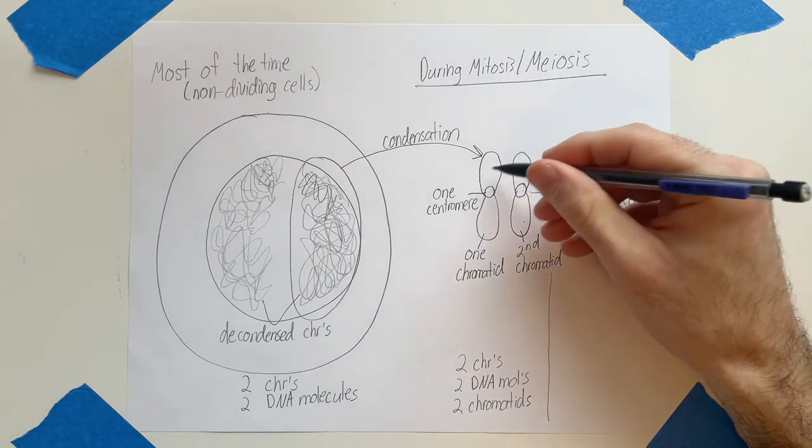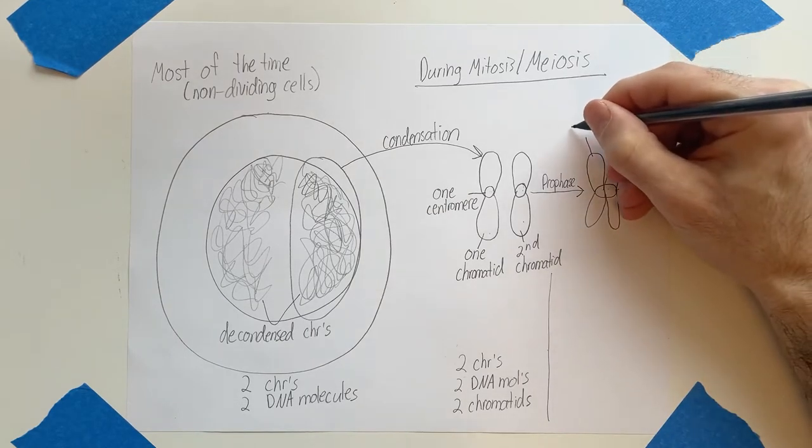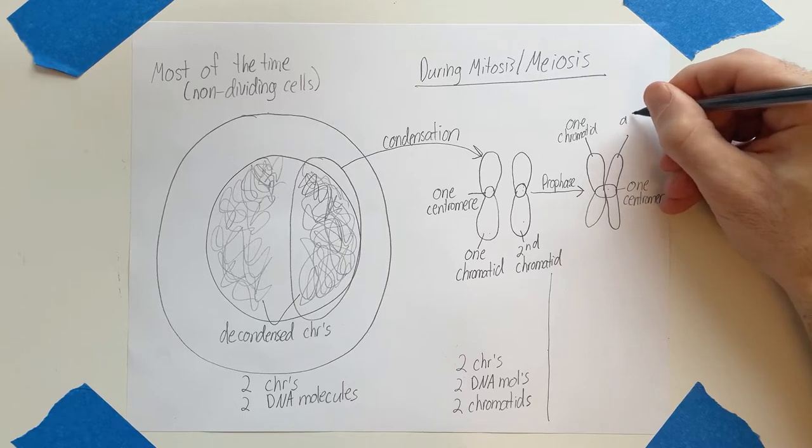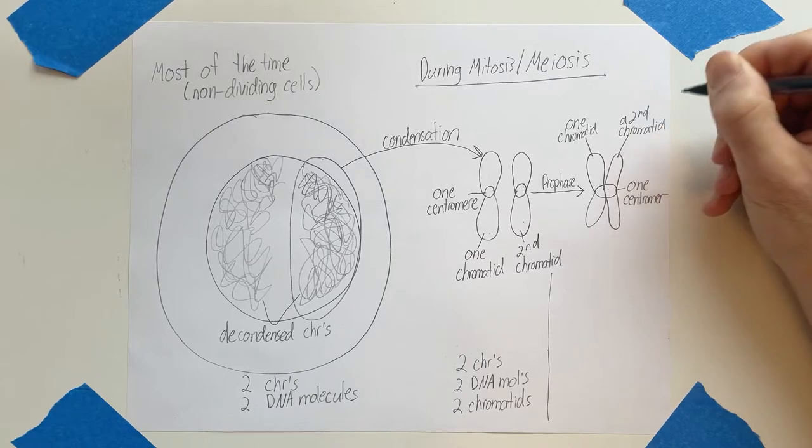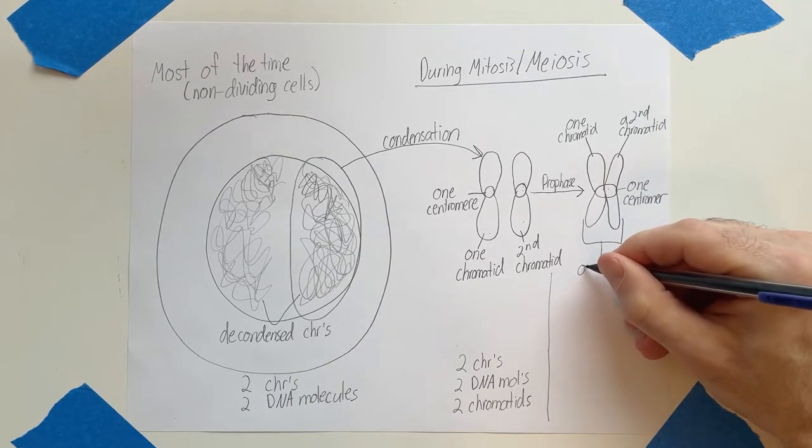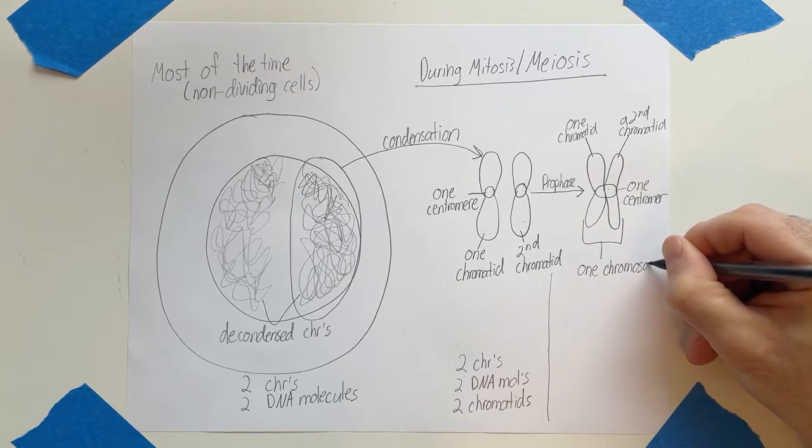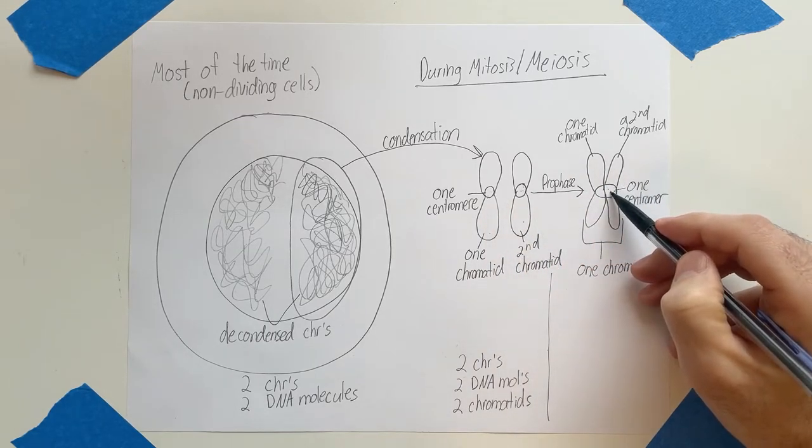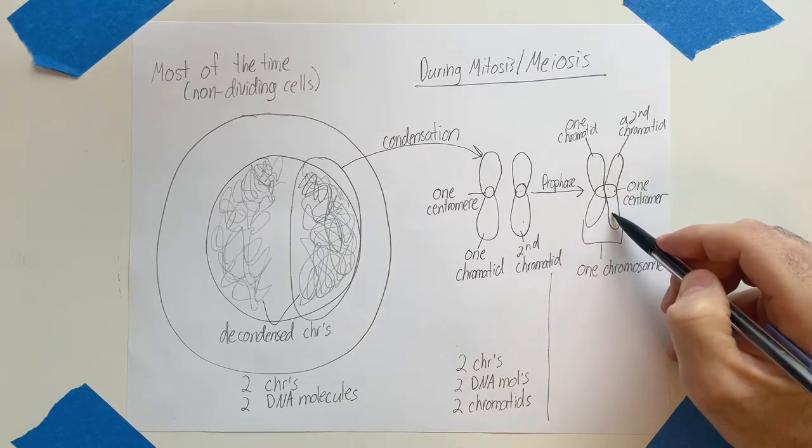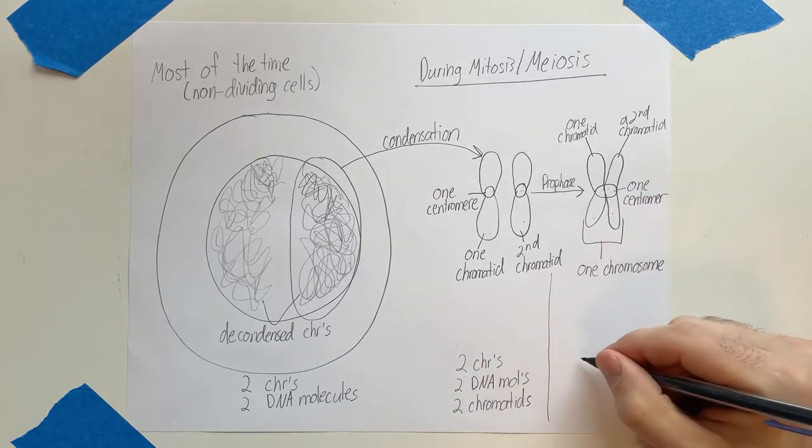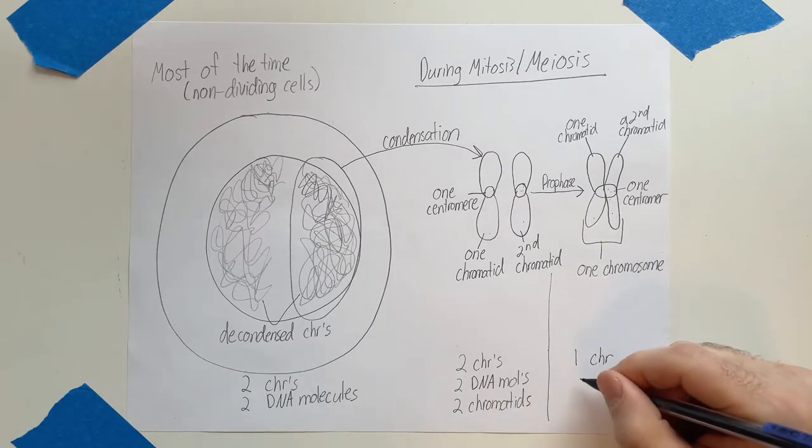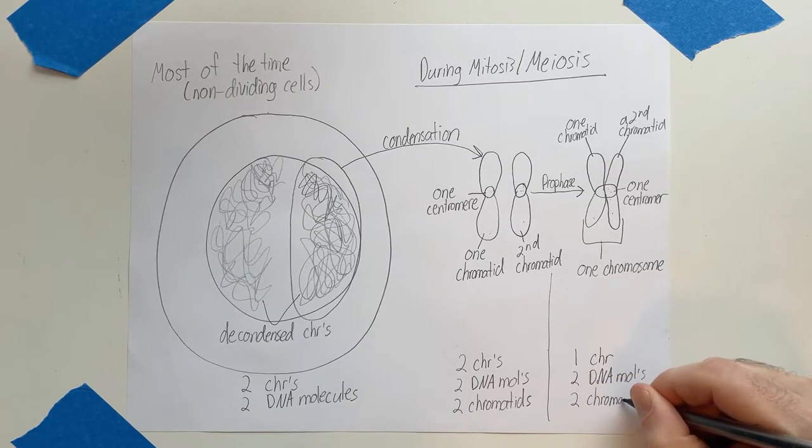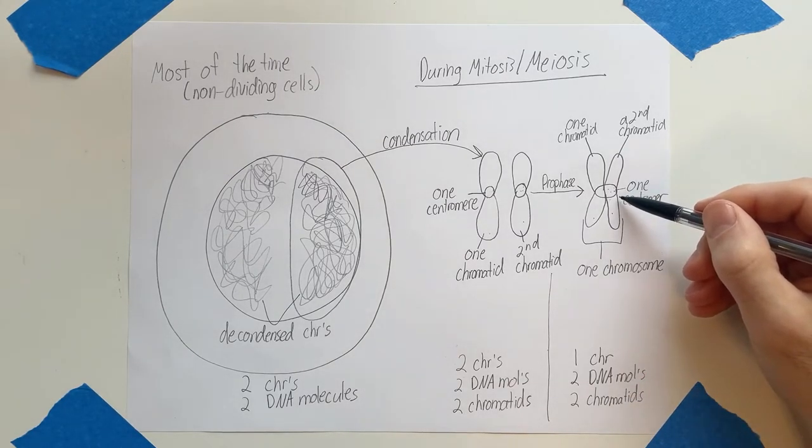Okay. However, what we call this is different than what we call these. So even though this is still one chromatid and this is still a second chromatid, this entire structure is now known as one chromosome. So when chromatids pair like this, you go from having two chromosomes to one chromosome, even though the number of chromatids and the number of DNA molecules has not changed. So in this picture, we now have one chromosome, two DNA molecules, and two chromatids.